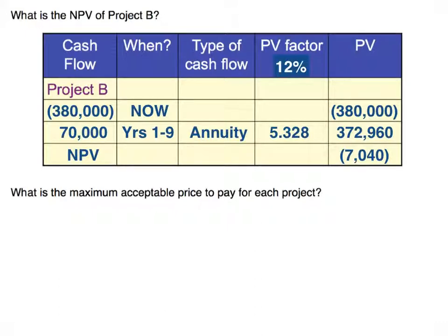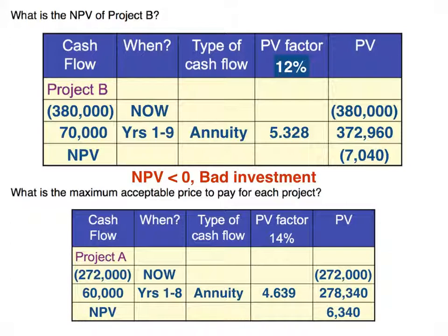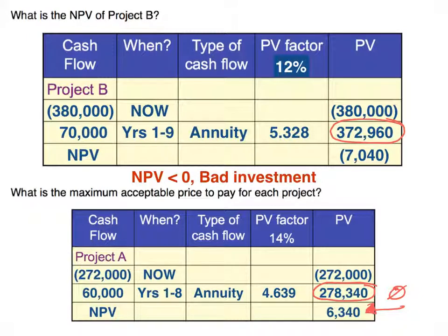The next question is: what is the maximum acceptable price you'd be willing to pay for each project? For Project A, even though it had a positive net present value, I would be willing to pay up to $278,340, because at that capital outlay the net present value would be zero. For Project B, I would only be willing to pay up to $372,960, because at that point net present value would be zero and I would be getting my required rate of return.